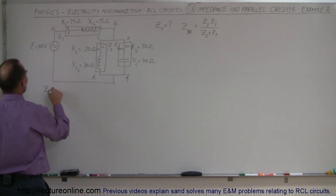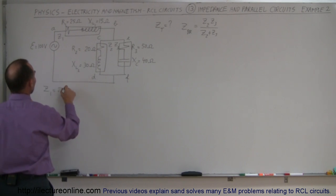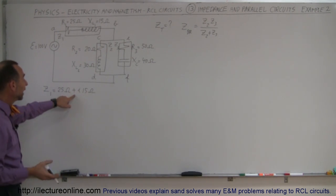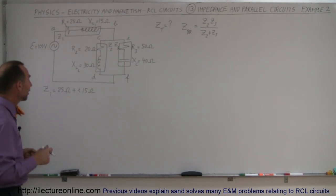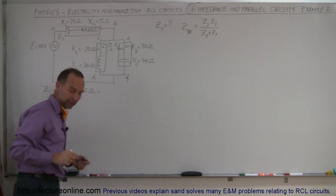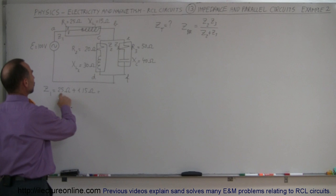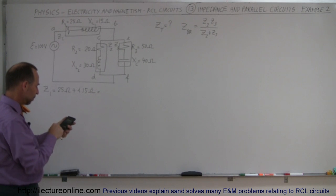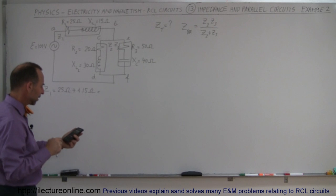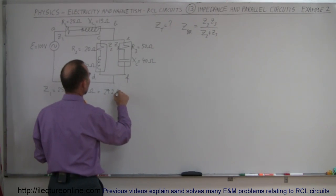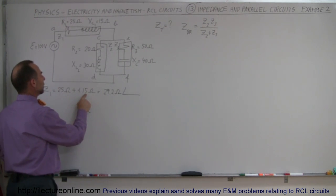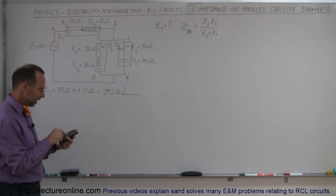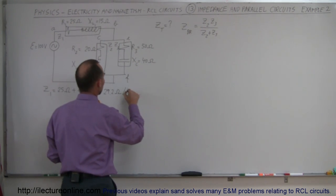Let's start with Z1. Z1 is equal to the real part, 25 ohms, plus the imaginary part, which is 15 ohms — that's the reactance of the inductor. Since it's an inductor, it's 90 degrees ahead of the resistance, so it's plus j15 ohms. In magnitude and phase angle form, we take 25 squared plus 15 squared, take the square root, and get 29.2 ohms. The phase angle is the arc tangent of 15 divided by 25, which gives us positive 31 degrees.